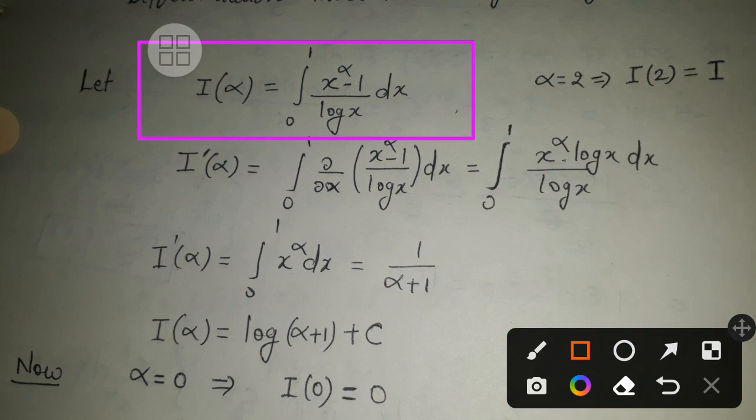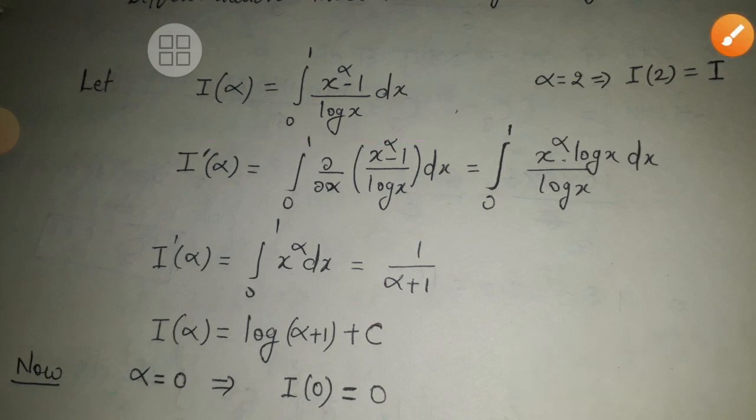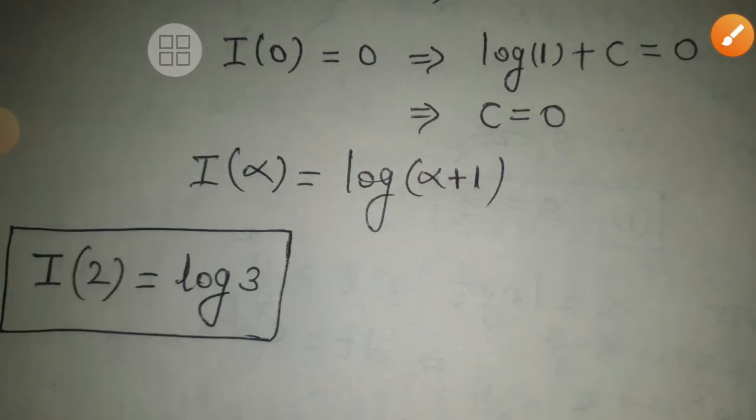If α = 0, then 1 - 1 = 0, which makes the numerator 0, so I(0) = 0. Since I(0) = 0, then log(1) + C = 0, so C = 0.